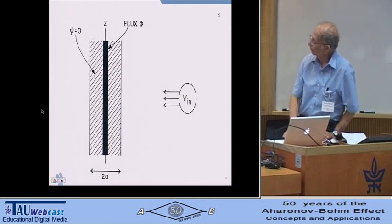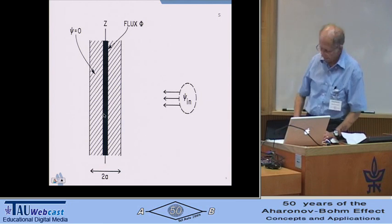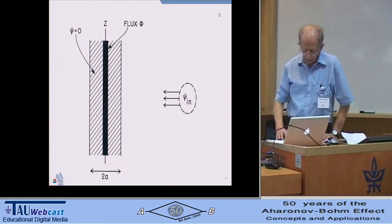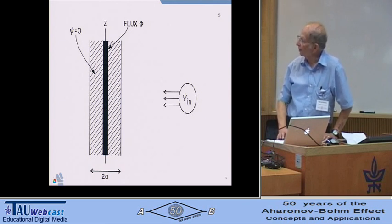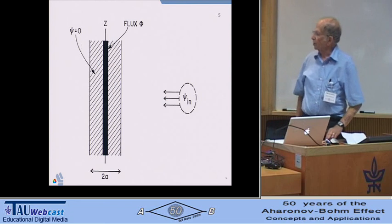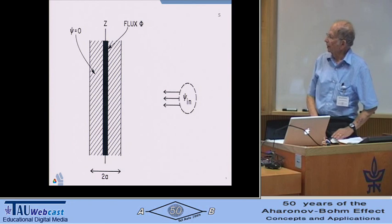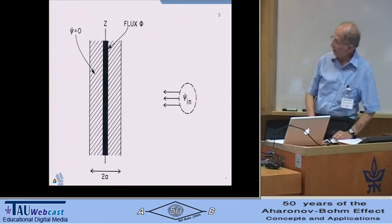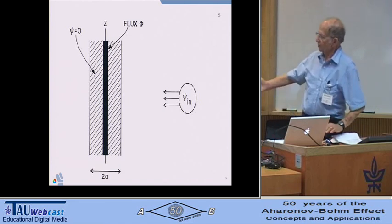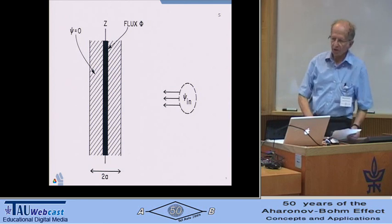So, we have a magnetic field confined to this region, think of it as a long solenoid. And just to avoid unnecessary arguments about exclusion, the region around it for some radius A is to exclude the electrons. There's an incident beam of electrons over here. They are moving from right to left because this is Israel.